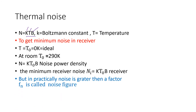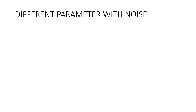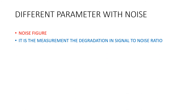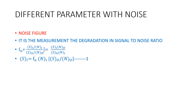Practically, noise is greater than this by a factor called the noise figure, represented by Fn. The noise figure is the ratio of the SNR of input to the SNR of output, and it measures the degradation in the signal-to-noise ratio. So Fn equals input SNR divided by output SNR. After rearranging, we get Si = Fn × Ni × (So/No), which is equation number 1.